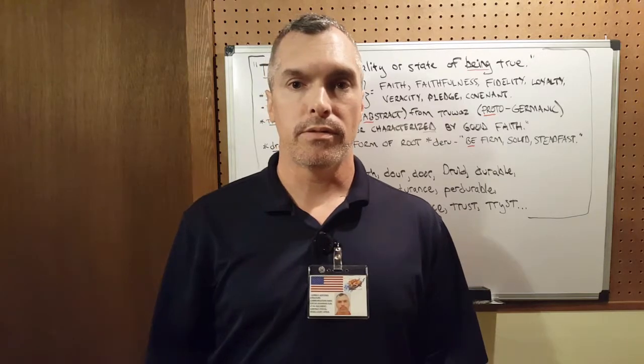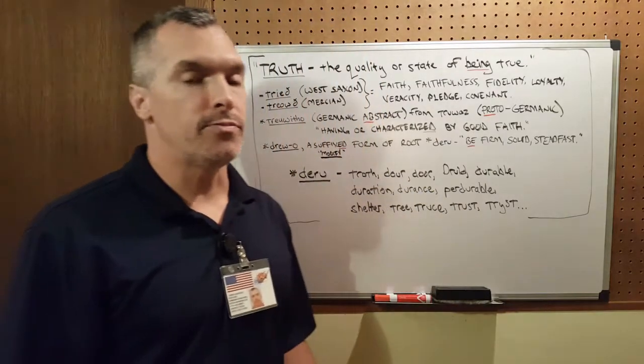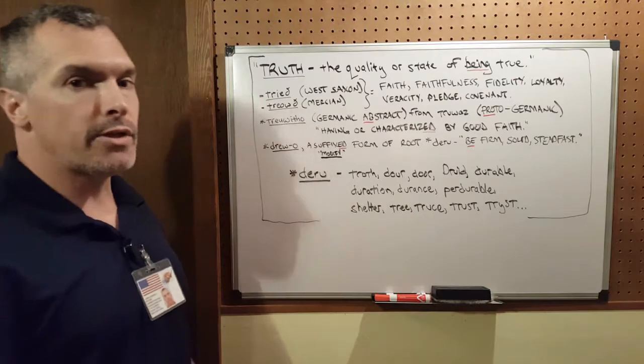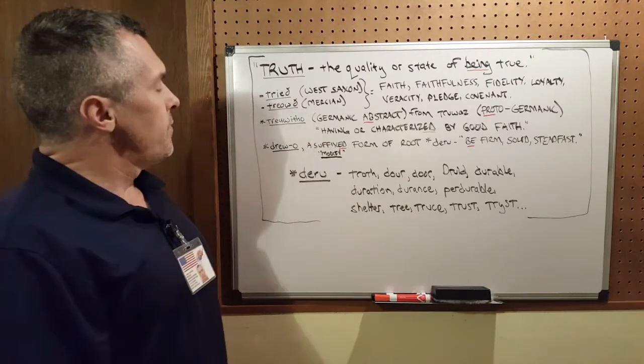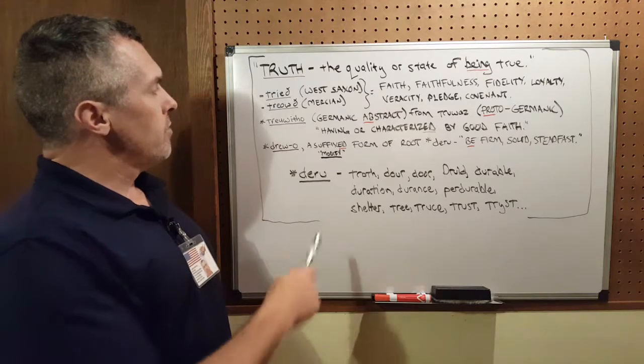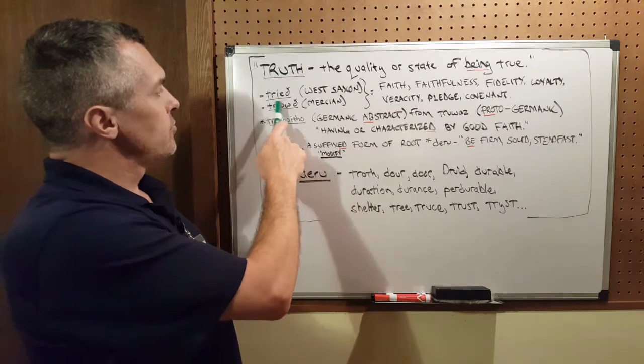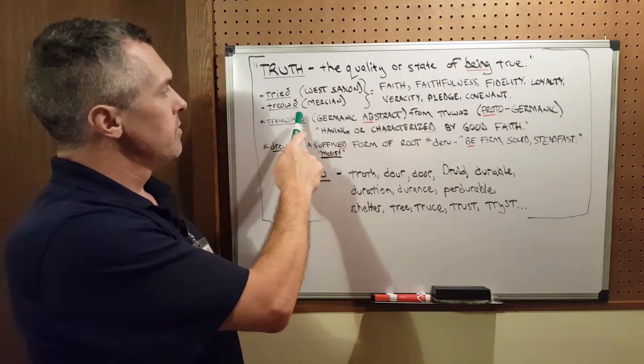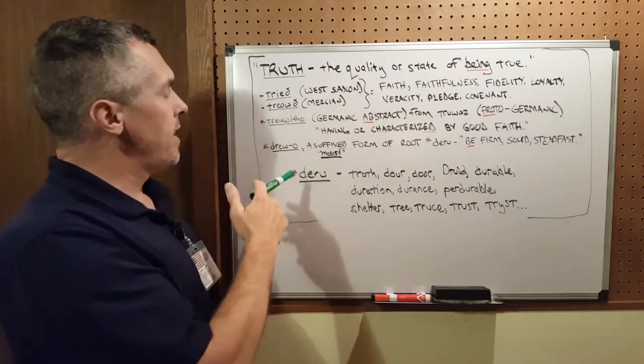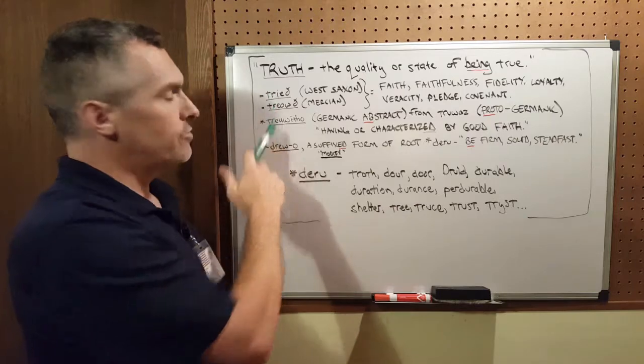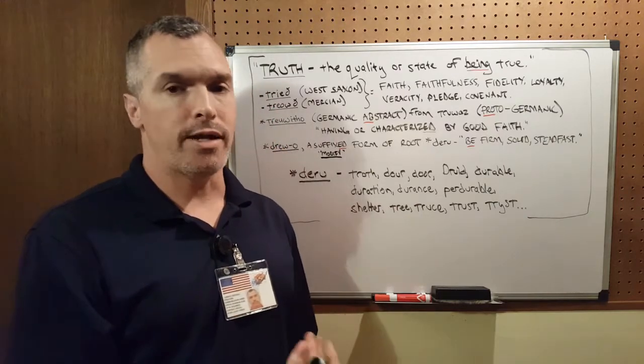The first two words I found were tried and true, West Saxon and Mercian—I hope I pronounced that correctly. I imagine tried and true is where that saying comes from. It's tried and true.